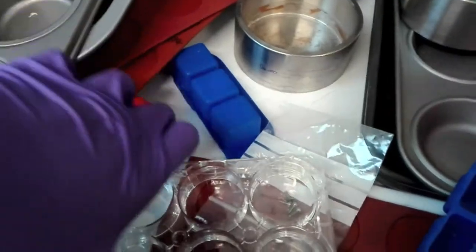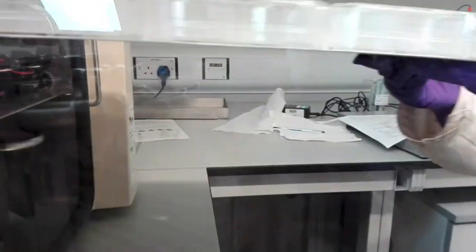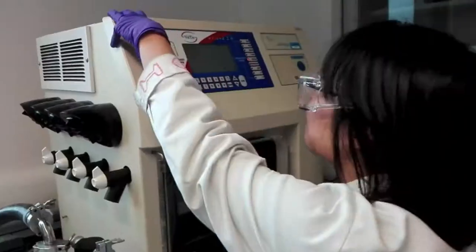From silicone muffin liners to stainless steel vessels, we pour our slurry into a mold of our choice in preparation for the final step: freeze drying. We pop the molds into the machine and let the freeze dryer work its magic.